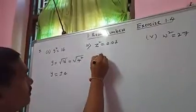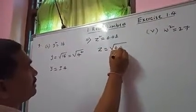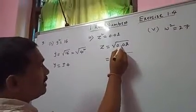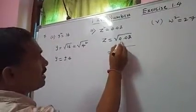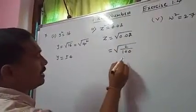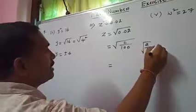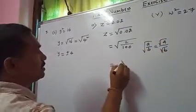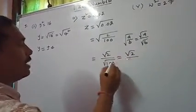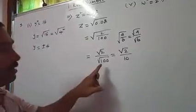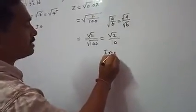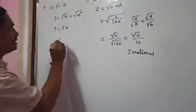Z equals root of 0.02. To simplify this, first remove the decimal: 0.02 equals 2 over 100 — there are 2 digits after the decimal, so we divide by 100. Applying root A by B equals root A by root B, we get root 2 by root 100. Root 2 is irrational, and root 100 equals 10. So Z equals root 2 over 10, which is irrational.